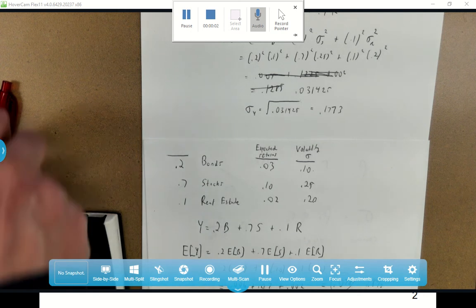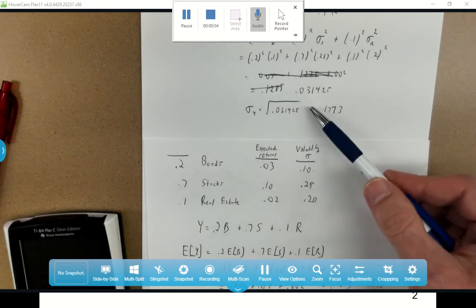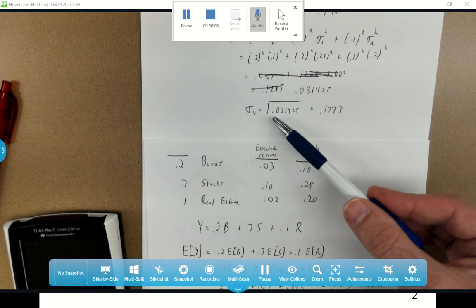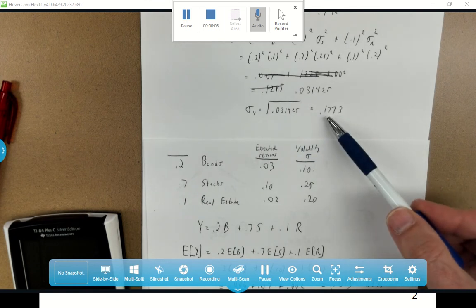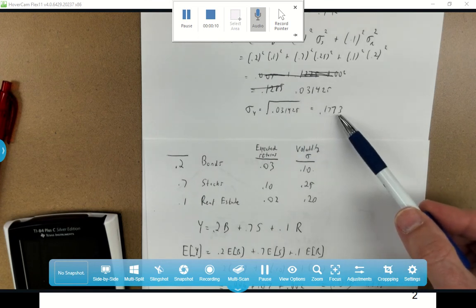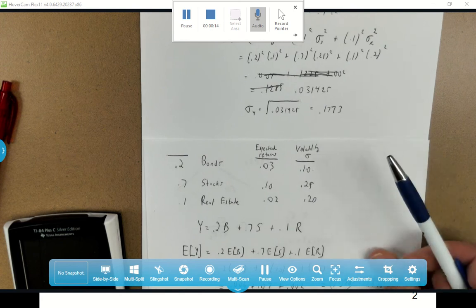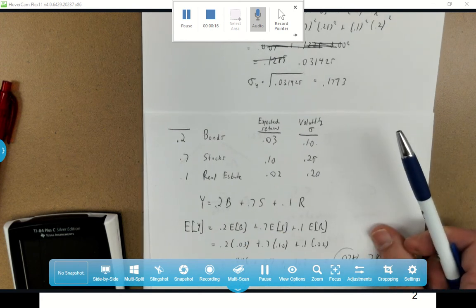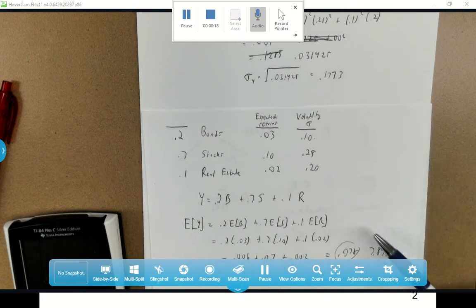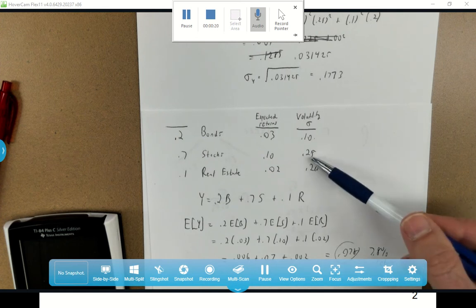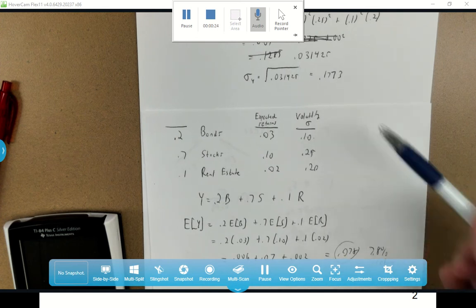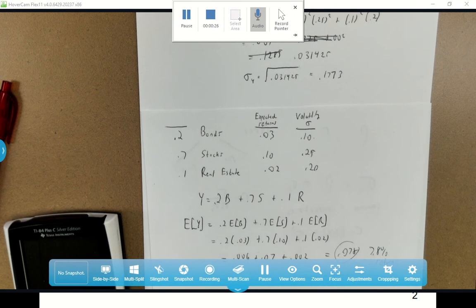When we add this all up, we get 0.031425, and take the square root, we get a standard deviation of 0.1773. Now notice we kind of sacrificed a little bit on return going from 10% to 7.83%,